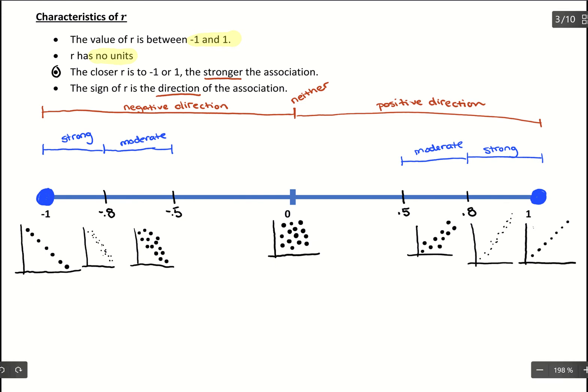Anything from negative 0.5 to positive 0.5 is considered weak. These graphs might look roughly linear, but they have so much scatter to them. On the right side, increasing, but again, just so much scatter it's kind of hard to even see the trend coming through.